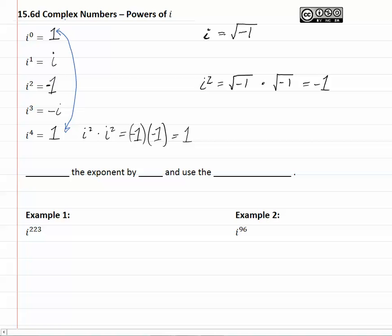So we can use a trick to simplify extremely large exponents attached to the imaginary number i. Here's a trick. We divide the exponent by 4, because that's when we see a repeat in the pattern, and use the remainder.